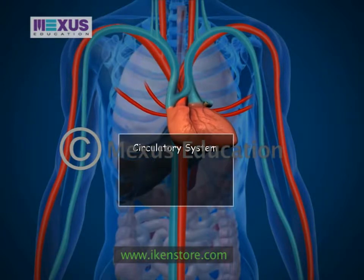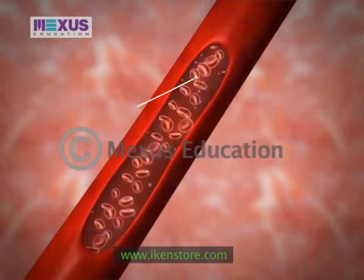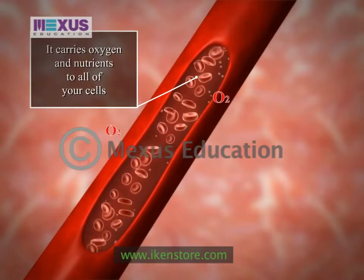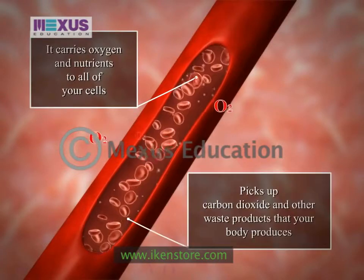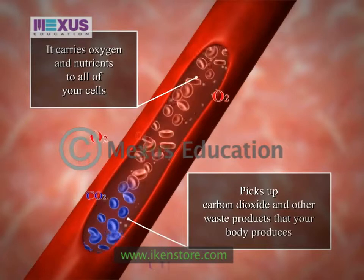Together, the heart and blood vessels are part of the circulatory system, which does two important jobs in the body: it carries oxygen and nutrients to all of your cells, and picks up carbon dioxide and other waste products.